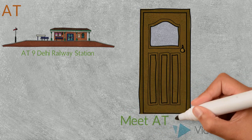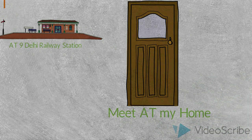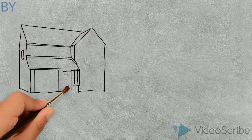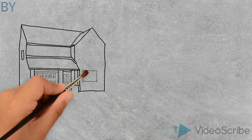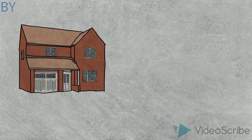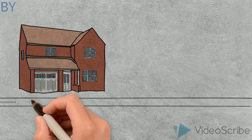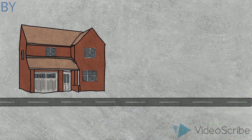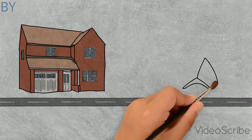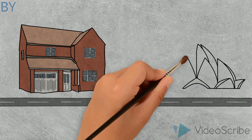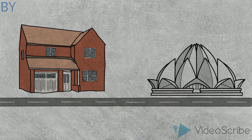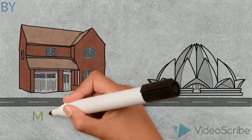For 'by' in location — as shown, there is a house with a road in front of it. My house is near Lotus Temple, so I would say: 'My house is nearby Lotus Temple.'